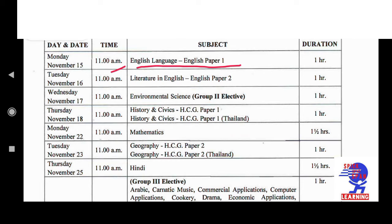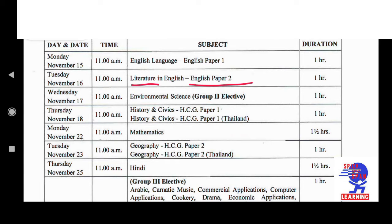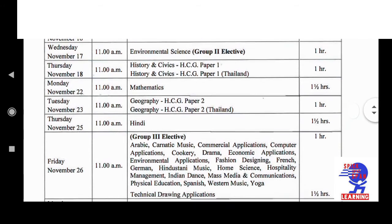The time duration is 1 hour. Next will be on the very next day, 16th November, at 11 a.m., and the subject is English Paper 2, that is Literature. Duration is the same — 1 hour. Third exam is on Wednesday, 17th November, at 11 a.m. — Environmental Studies Group 2 Elective. Duration is the same, 1 hour. Simply means that no gap is available between these days.